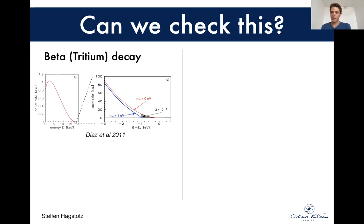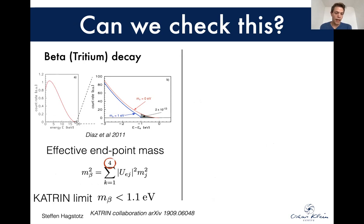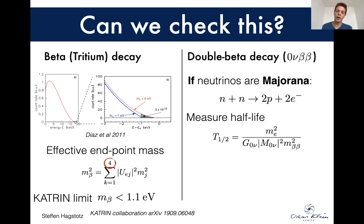In a situation like this, we can ask: can we check this in another way? Can we cross-check these results? One way to do this is to look at tritium decay or beta decay experiments in general, where you measure the endpoint of the decay spectrum. The effective endpoint mass gets contributions from all neutrino states, so if there's an additional fourth neutrino, then this endpoint mass is modified. Currently the KATRIN collaboration constrains this effective m-beta mass to be less than 1.1 electron volts or so.